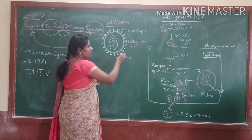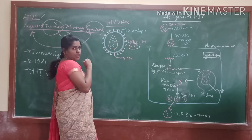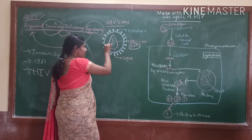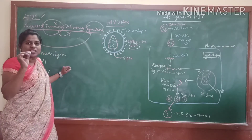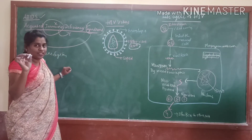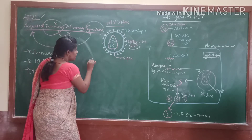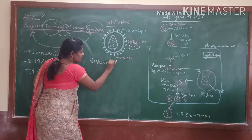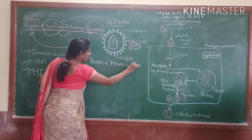And this genetic material is considered as RNA — ribonucleic acid. This ribonucleic acid is covered by a capsid. And this virus has one special character — a special enzyme. That is nothing but reverse transcriptase.